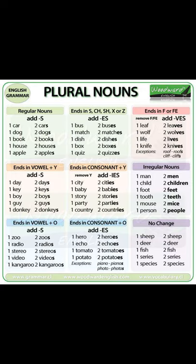Examples of -f/-fe to -ves: wife → wives, wolf → wolves, shelf → shelves. Exceptions include: roof → roofs, belief → beliefs, chef → chefs, chief → chiefs. If a singular noun ends in -y and the letter before the -y is a consonant, change the ending to -ies to make the noun plural.